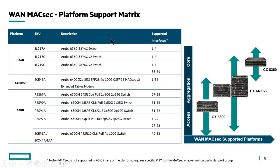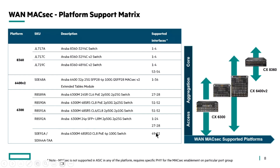Here is the list of platforms supporting WAN-MACSEC. From access to core layer, we have the 6300 ranging from access to aggregation, then the 6400v2, and at the core layer the 8360. Not all SKUs of these platforms have MACSEC capability — only selected SKUs support WAN-MACSEC. The listed SKUs and their supported ports require a specific FPGA for MACSEC to work, as MACSEC is not supported in the ASIC. When planning a WAN-MACSEC deployment, ensure you use the correct supported interfaces.